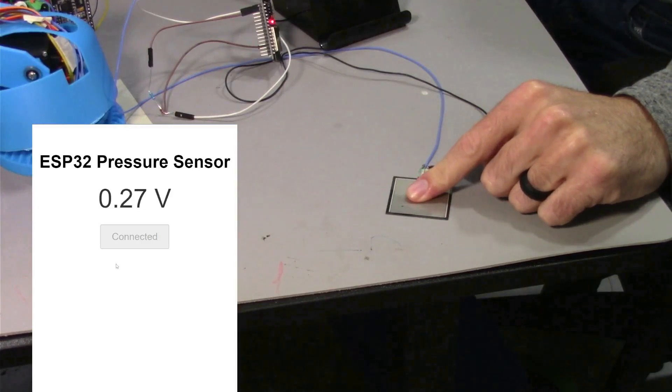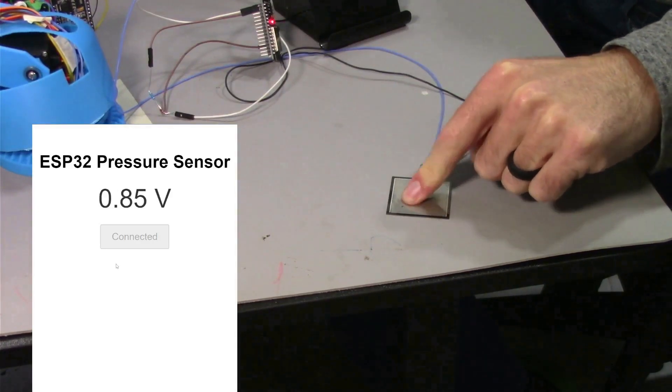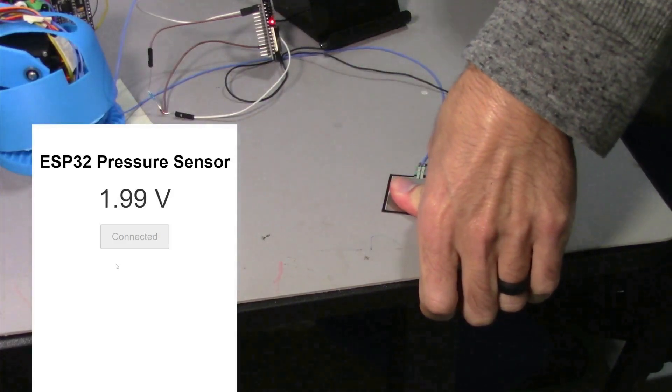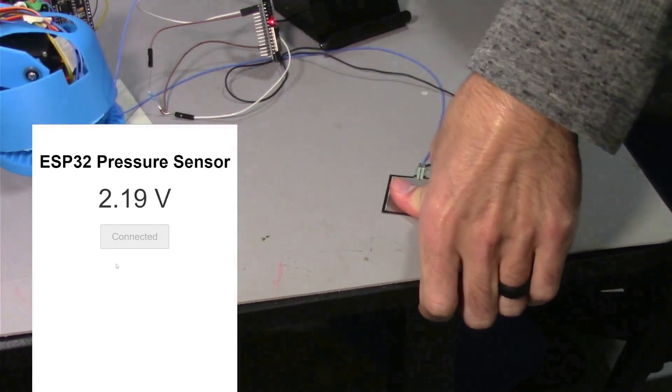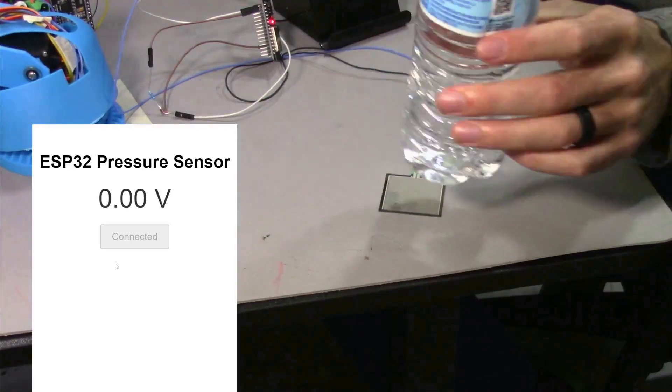Using this Bluetooth connection, I can detect the voltage of the analog pin that is connected to the sensor. I'm going to push down on it as hard as I can and try and max this thing out at 3.3 volts.